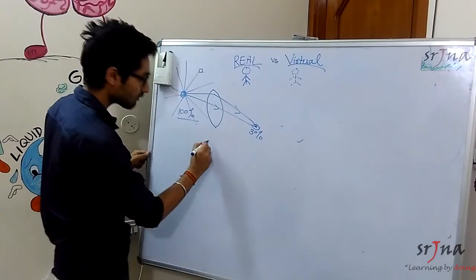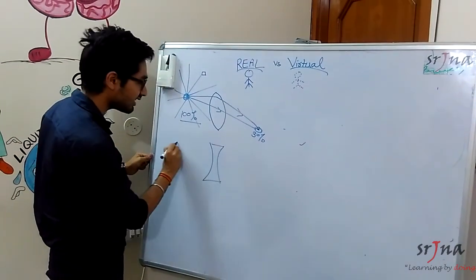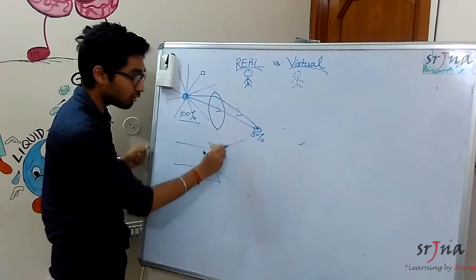So now coming to the virtual thing. In virtual what happens is when the rays are coming like this they diverge away. They are not actually meeting.